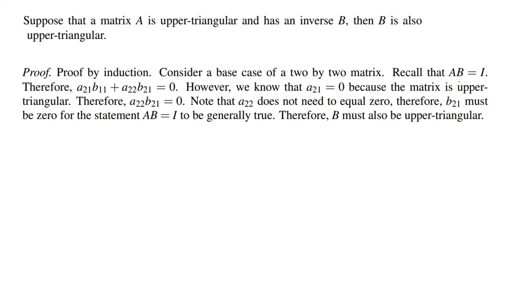In that case, if you do the multiplication for the entries of the matrix A and its inverse, a₁₁b₁₁ + a₂₂b₂₁ = 0. Note that a₂₂ does not need to equal zero. Therefore, b₂₁ must be zero for the statement AB = I. Please note that a₂₁ must be equal to 0. Why is that? Because your matrix is upper triangular.